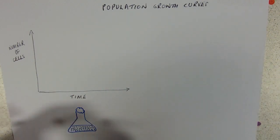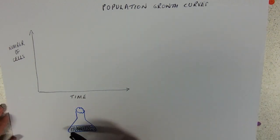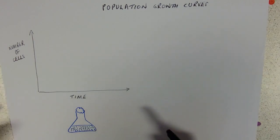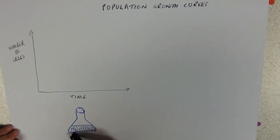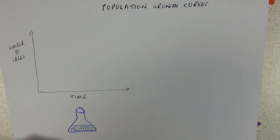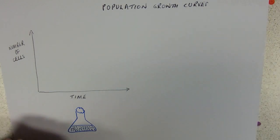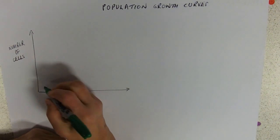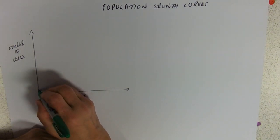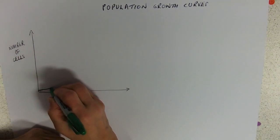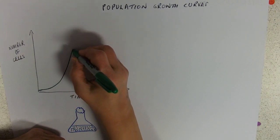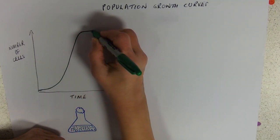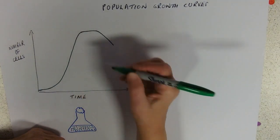If we're in a closed system — no immigration, no emigration — all they've got is the nutrients inside the flask. The population curve follows a pretty characteristic pattern: it starts off quite slowly, it rises, it levels off, and then it dips.